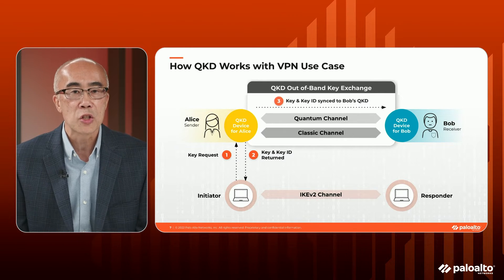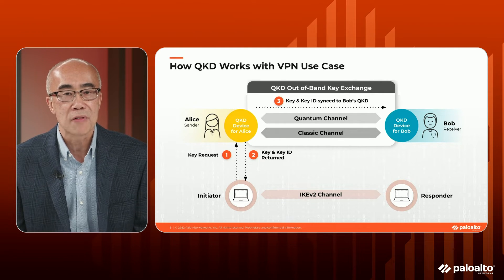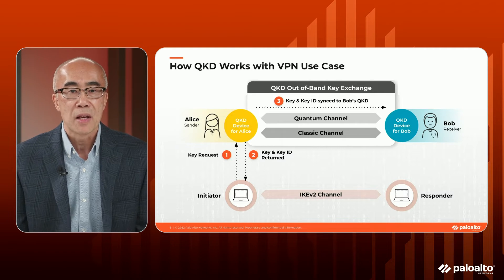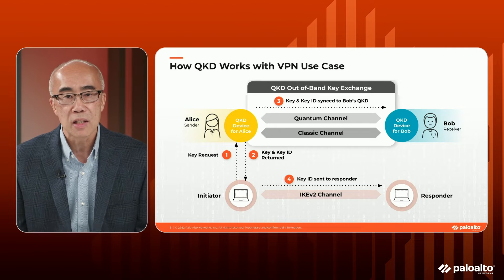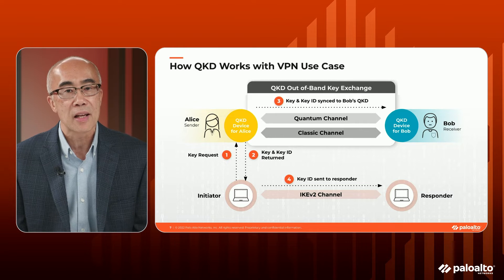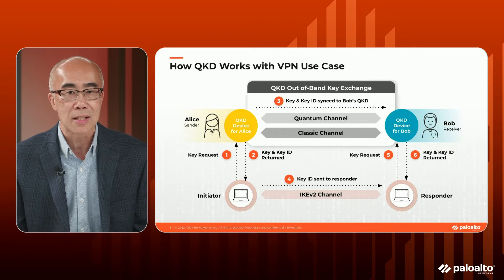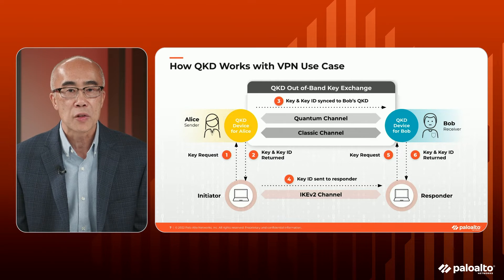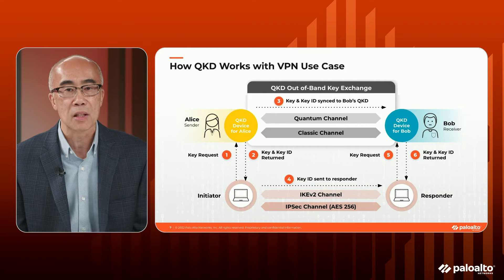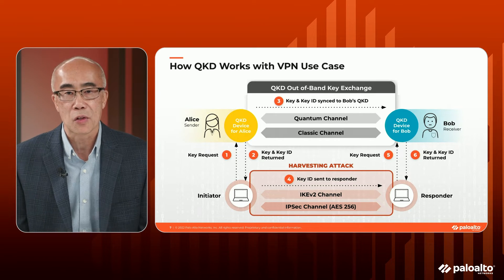These are pairs of information that travel together. This information is also synchronized between the QKD appliances between Alice and Bob, so both appliances have the exact key and key ID combinations. We communicate only the key ID in the IKEv2 exchange — no key material is sent between Alice and Bob. Bob's responder receives the handshake with the key ID and uses it to make the same request to its QKD appliance, which looks up the key ID and returns the exact symmetric key. We can then set up a secure IPsec channel using something like AES-256, giving us a quantum-resistant capability against the harvesting attack.